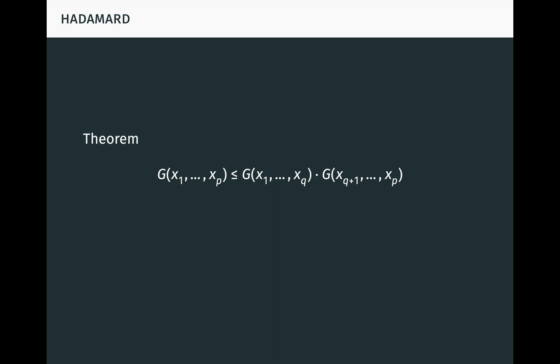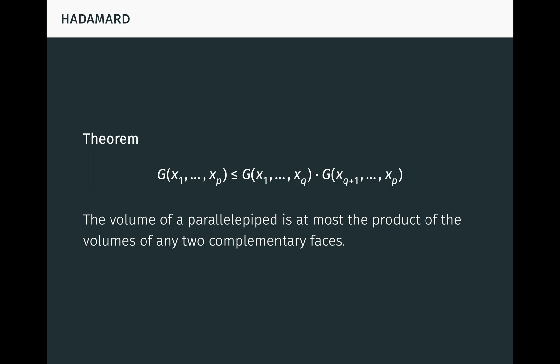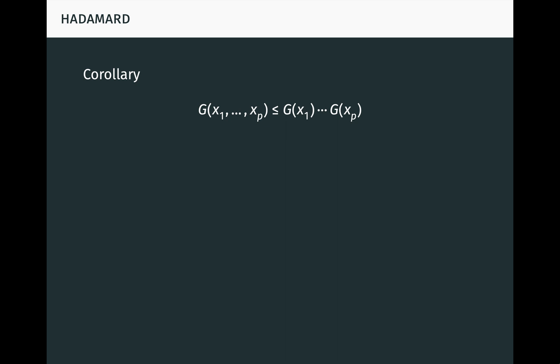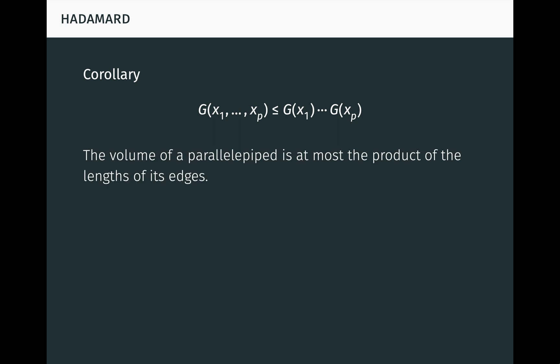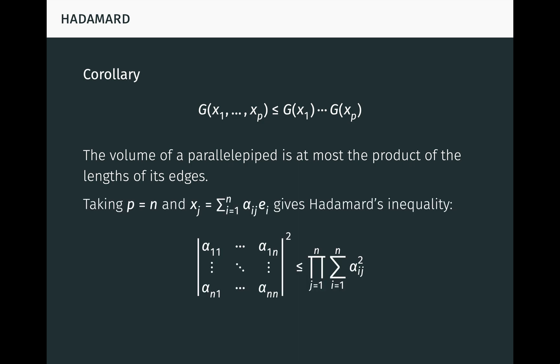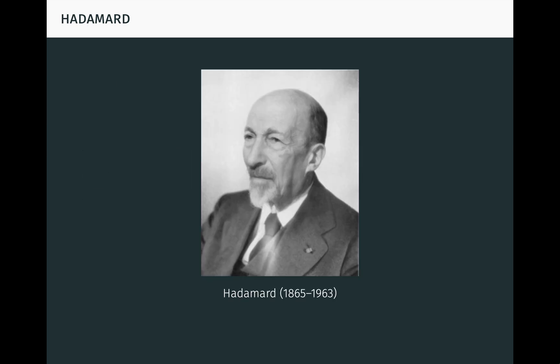While the Pythagorean theorem states an equality, sometimes we don't need equality. A useful inequality states that g is at most g times g for any q between 1 and p. Geometrically, this says that the volume of a parallelepiped is at most the product of the volumes of any two complementary faces. Repeatedly applying the theorem, we obtain that g is at most the product of g — in other words, the volume of a parallelepiped is at most the product of the lengths of its edges. Taking p equal to n and expressing the x's in terms of coordinates relative to an orthonormal basis gives Hadamard's classic inequality for the determinant, seen here. That last one is due to the prolific French mathematician Jacques Hadamard, who as far as I know didn't have any unfortunate encounters with bicycles.